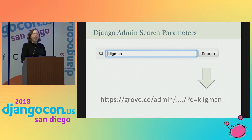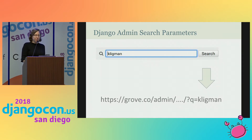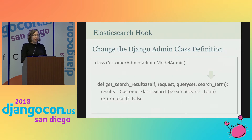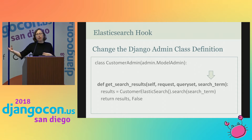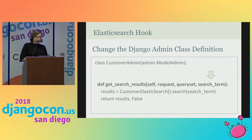Hooking it into the admin is also pretty simple. When I perform a full text query search, Django uses the 'q' parameter. I can hook it into the class definition — there is a function called get_search_results that will take that parameter. We can then take those query terms, ship them off to Elastic, receive the result set back, rehydrate it into a queryset, and ship it into the admin. It's actually this simple to do.